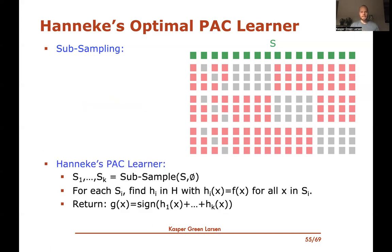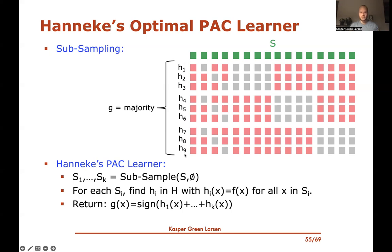Hanneke's full learning algorithm generates all these subsamples and for each one performs empirical risk minimization — finding a hypothesis in H that agrees with f on all elements in the subsample. This is possible because we're in the realizable case. He then returns the majority vote over all these hypotheses. That is Hanneke's optimal PAC learner in the realizable case.